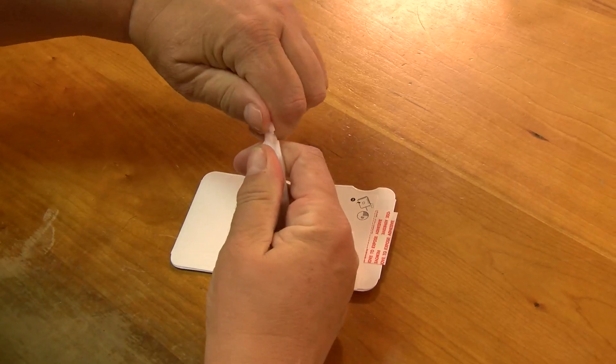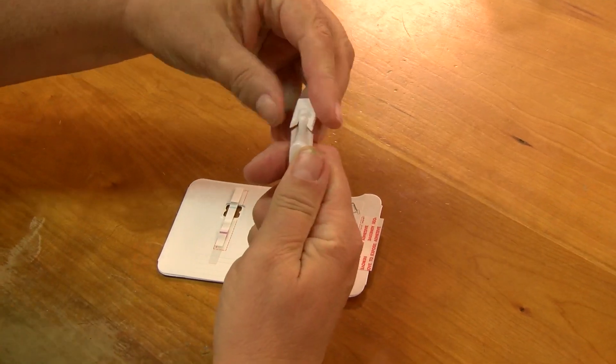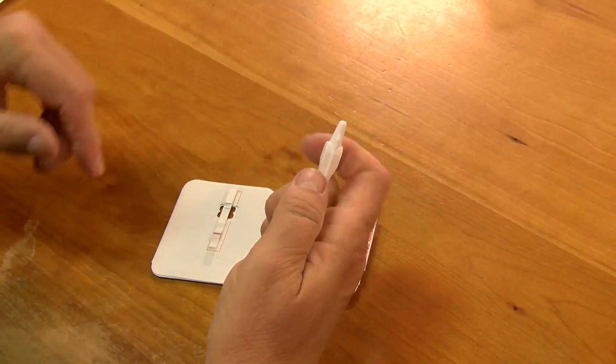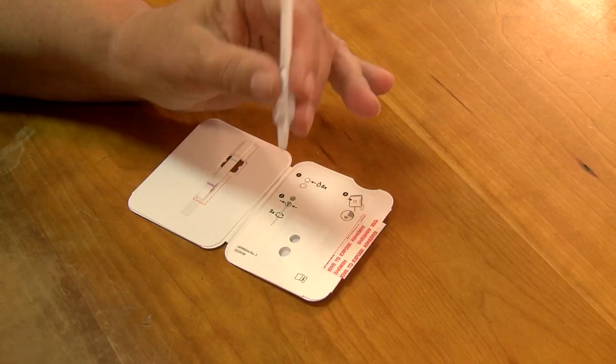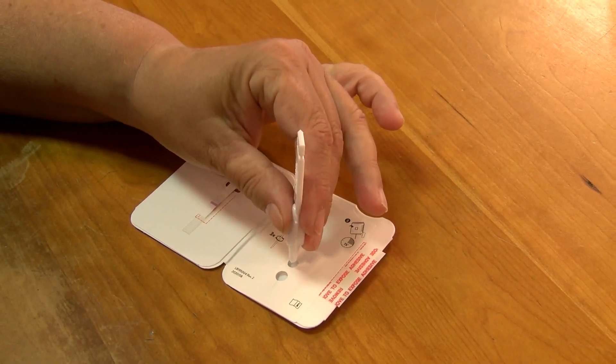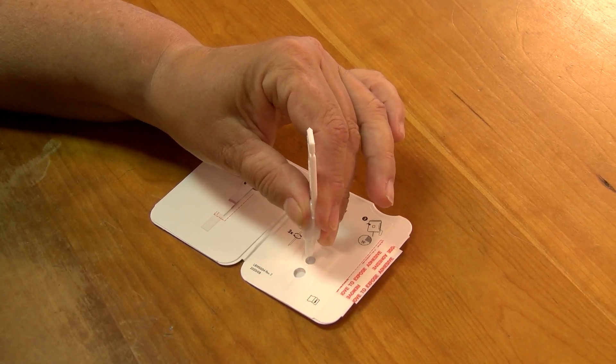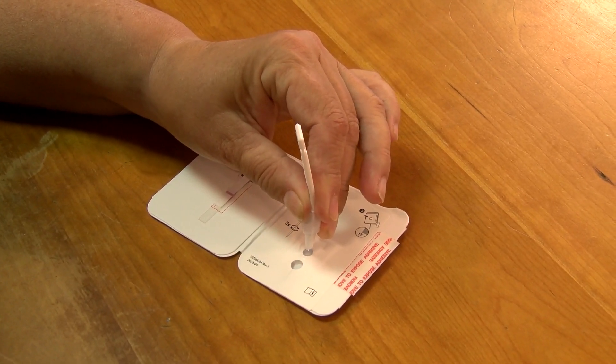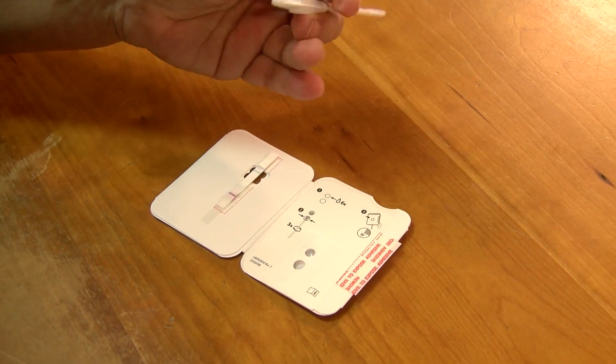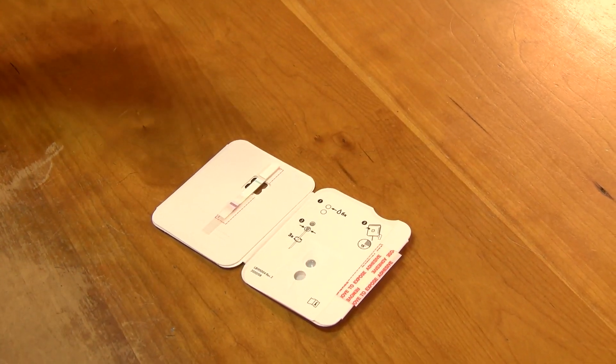Remove the dropper bottle cap. Hold the dropper straight over the top hole and place six drops in the top hole. Do not let the dropper touch the card.